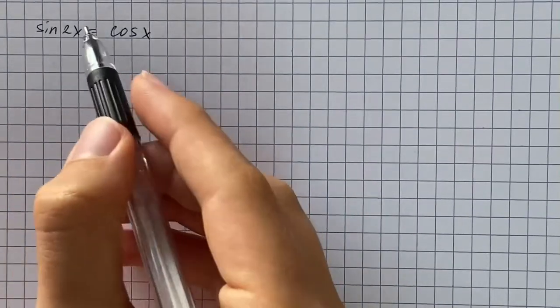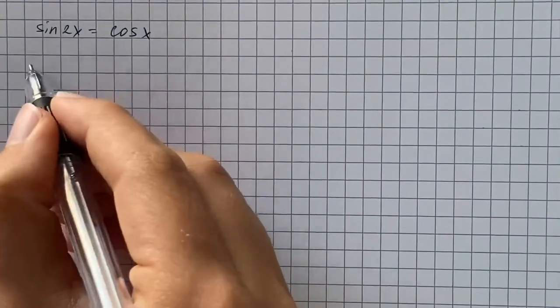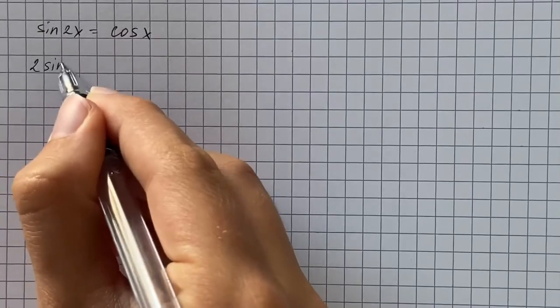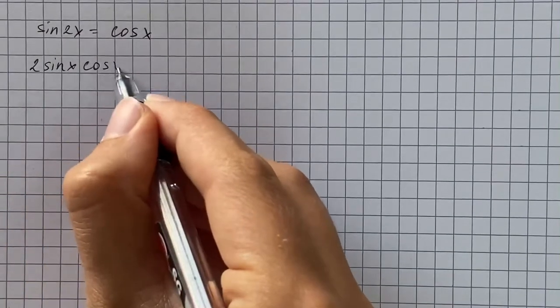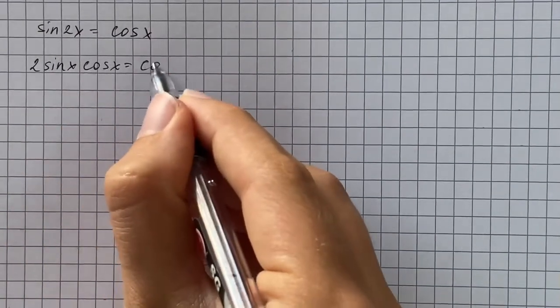At first we're going to rewrite the left side using the identity that sine of 2x equals 2 sine of x times cosine of x, and that equals cosine of x.